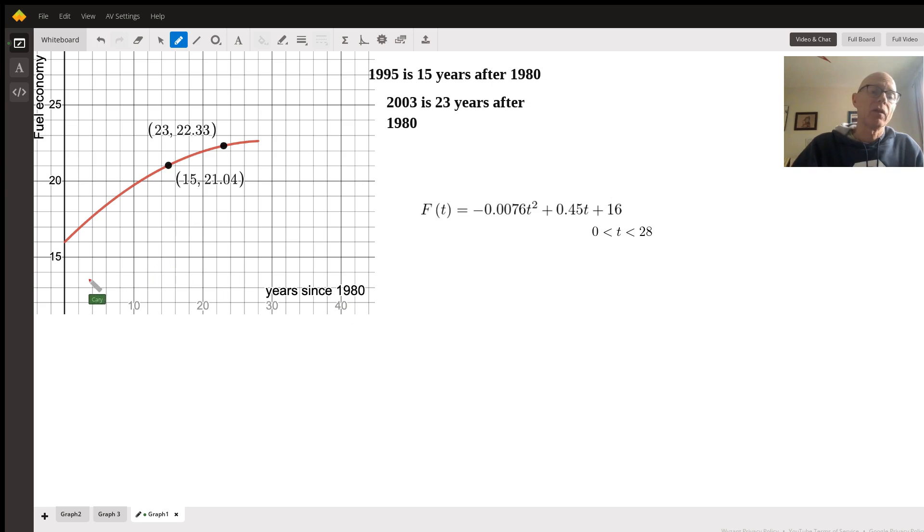The output of our function is representing the fuel economy, average fuel economy of cars. So since T is representing years since 1980, that means that 1995 is represented by 15 and 2003 is represented by 23.